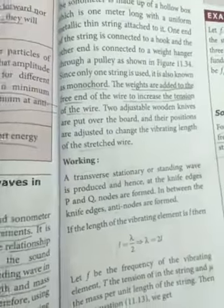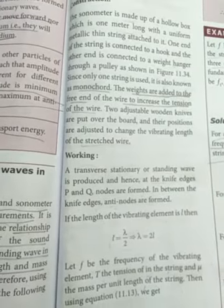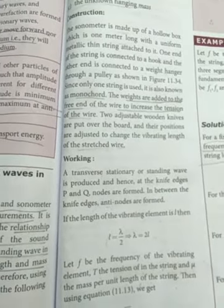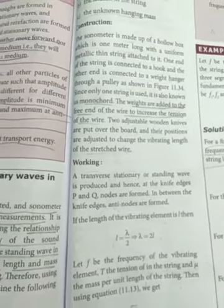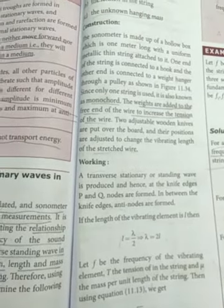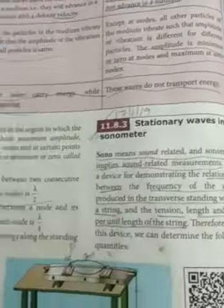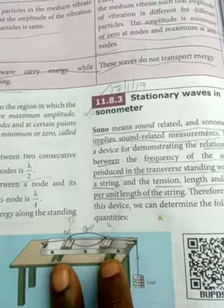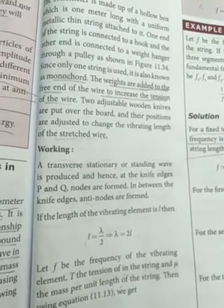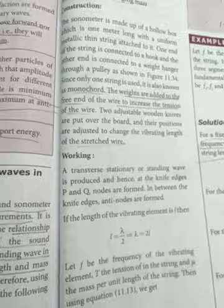Working. So you see that working. A transverse stationary or standing wave is produced and ends at the knife edges P and Q. So I am telling you this is P, this is Q, two knife edges. In between the knife edges antinodes are formed.